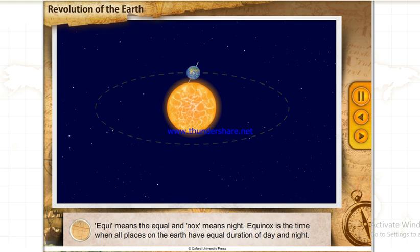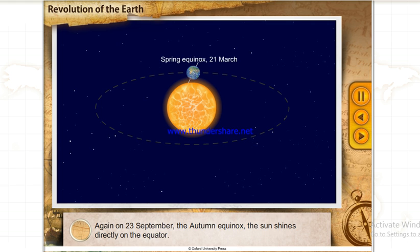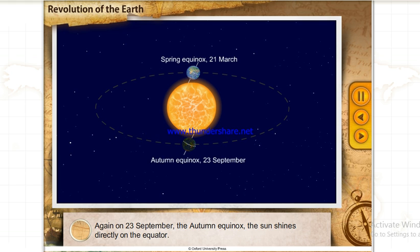Equi means equal and nox means night. Equinox is the time when all places on the Earth have equal duration of day and night. Each year, on 21st March, the spring equinox, the Sun shines directly on the equator. Again on 23rd September, the autumn equinox, the Sun shines directly on the equator.